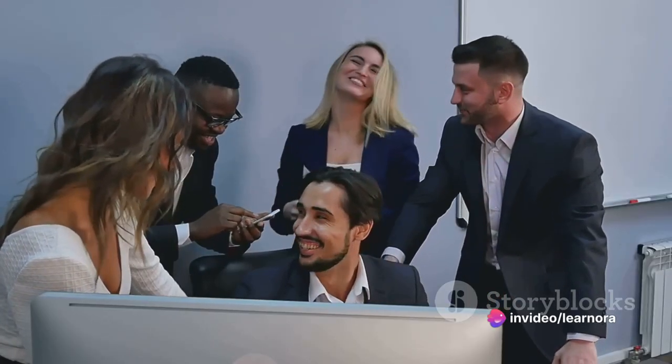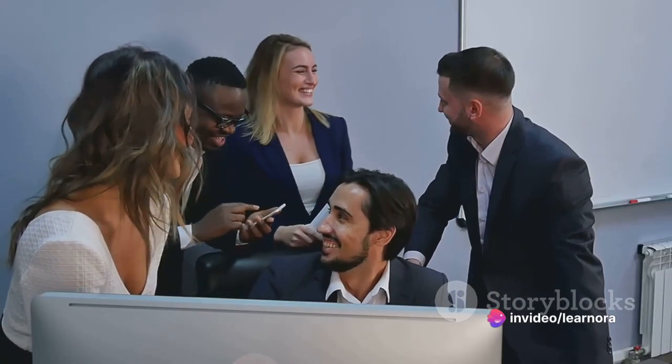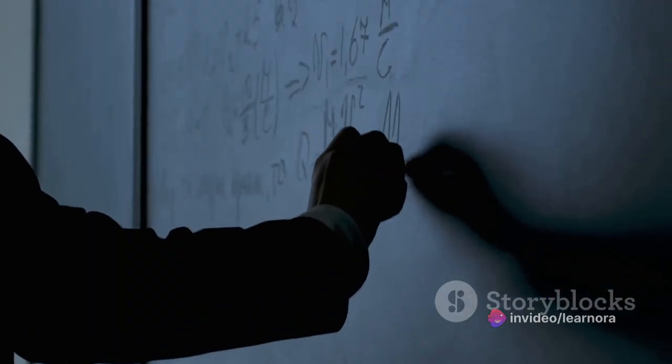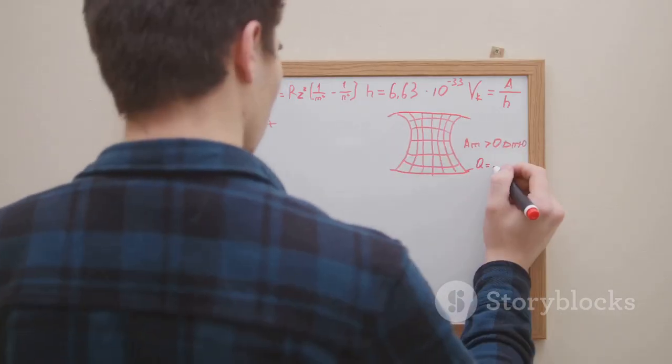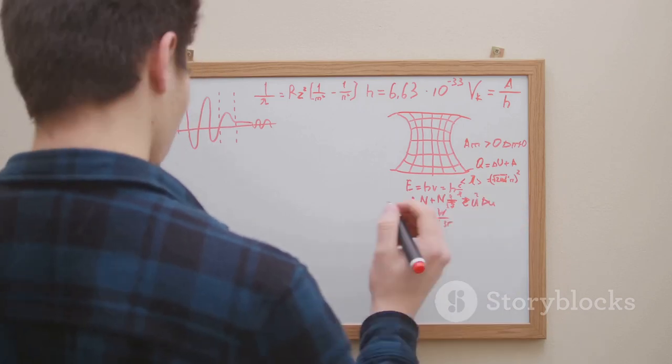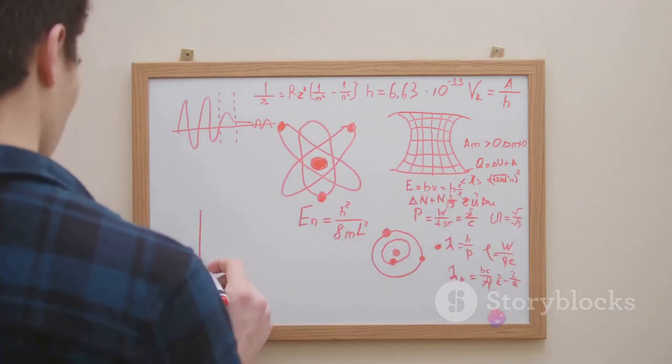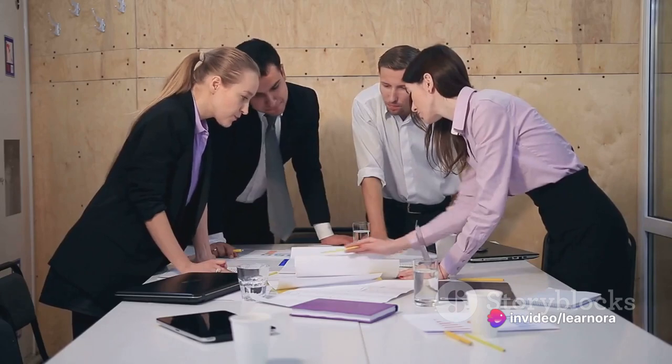The formula used here is: purchase price variance equals actual cost per unit minus standard cost per unit times standard units expected to be used. The responsibility of managing this variance lies squarely on the shoulders of the purchasing department.